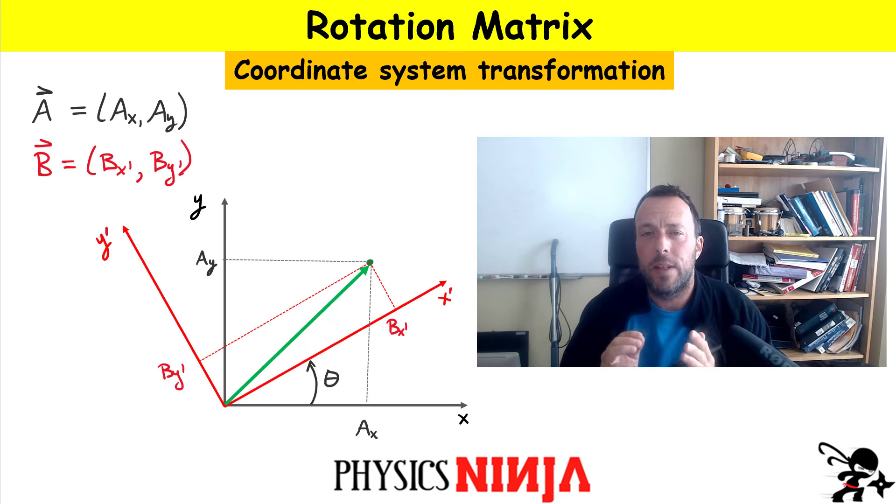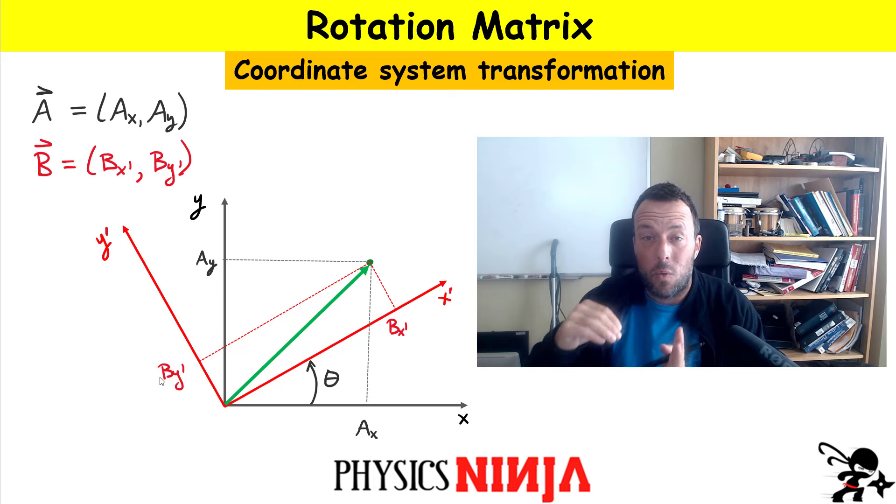It might look something like this. So I have a prime coordinate system drawn in red. So I'm showing you the same vector now. It has components BX prime and BY prime in a different coordinate system.